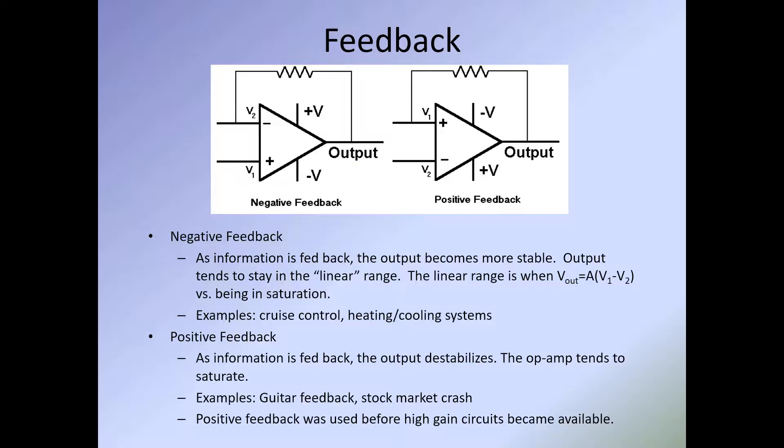With positive feedback, as information is fed back the output destabilizes and the op amp tends to saturate. Examples include guitar feedback and the stock market crash — it just continues to build exponentially. Positive feedback was used more before high-gain circuits became available. We will look a little bit at positive feedback, but the primary emphasis in this course for op amps is going to be negative feedback.